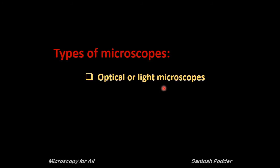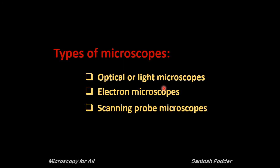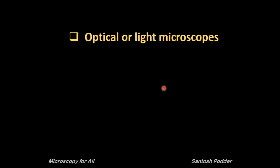Microscopes are of three types: optical or light microscopes, electron microscopes, and scanning probe microscopes.